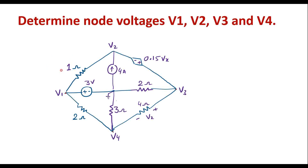In this video, I will consider one numerical on node analysis. We need to determine node voltages V1, V2, V3, and V4. Here we have four nodes — V1, V2, V3, and V4 — and we are supposed to calculate voltages at these nodes. This can be solved either using loop analysis or using node analysis. I will try to solve this using node analysis.